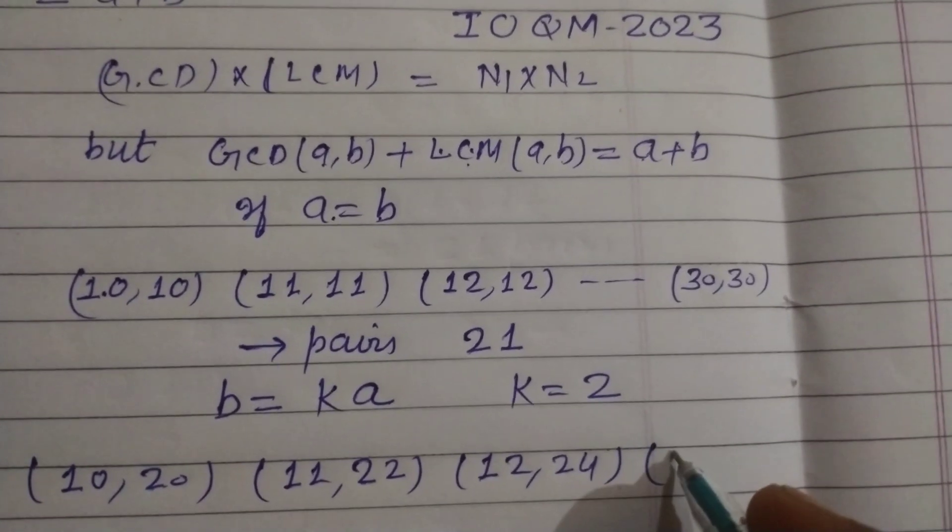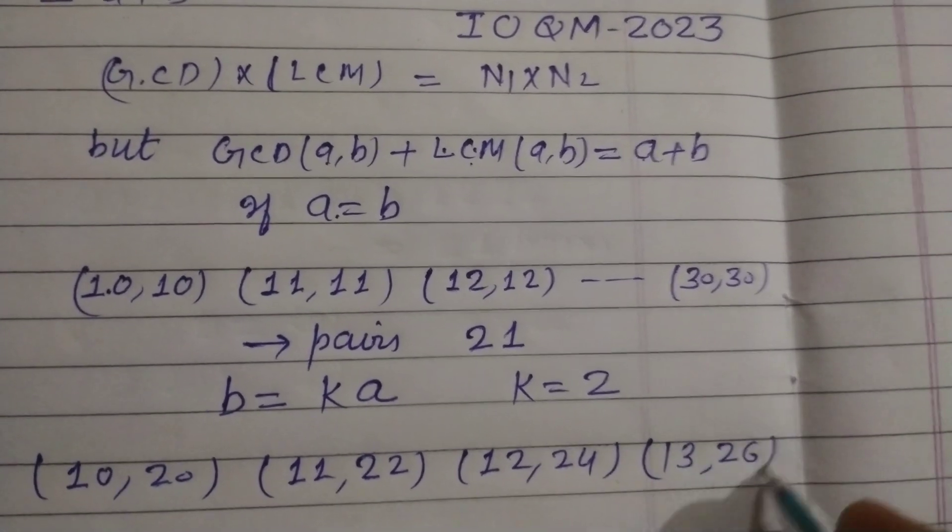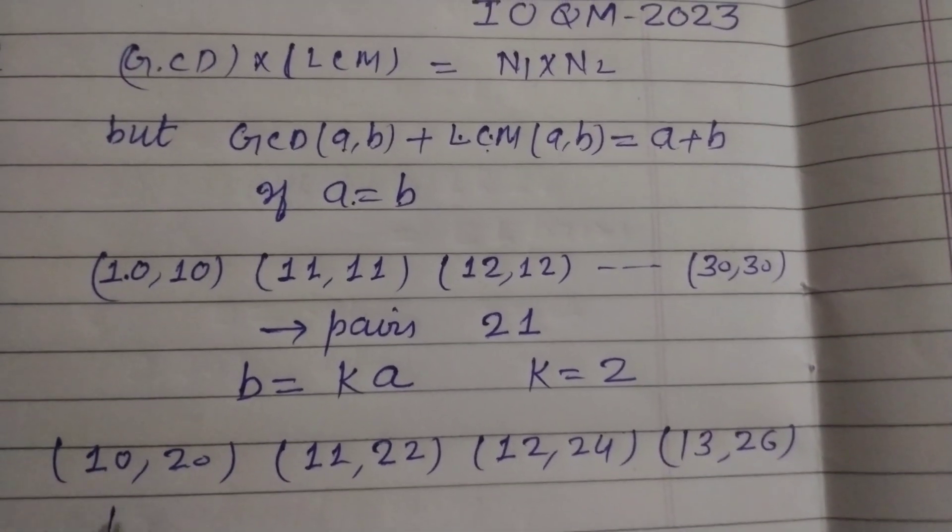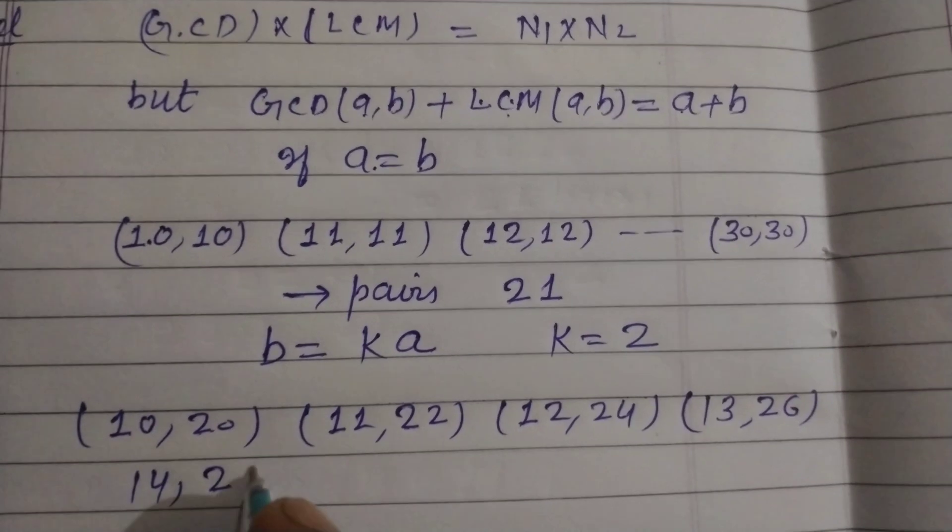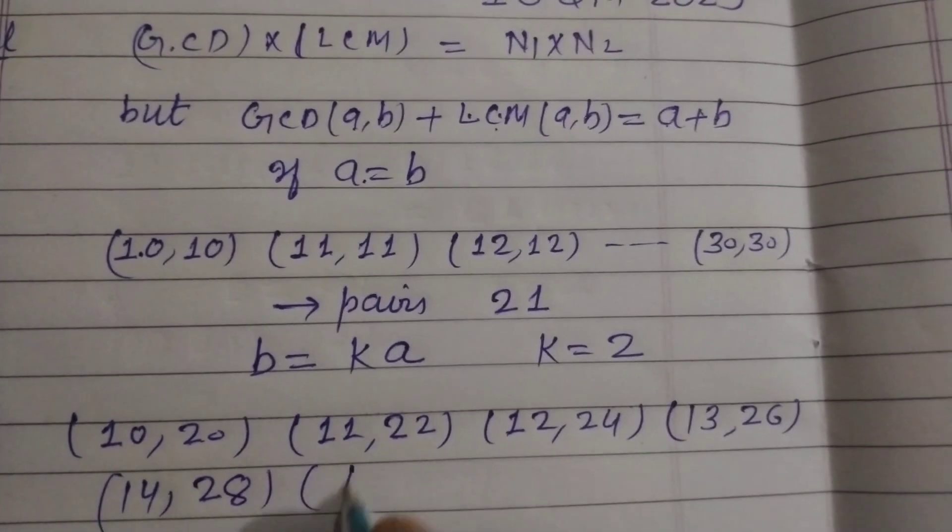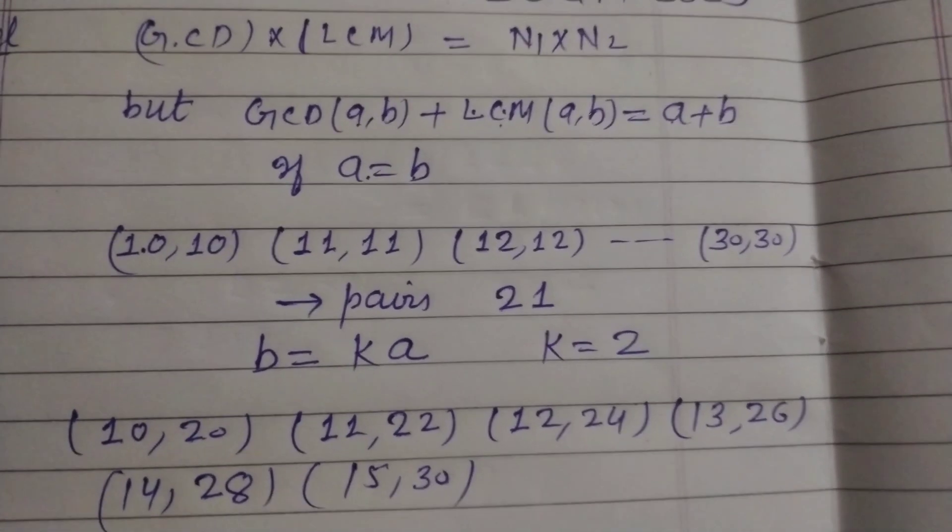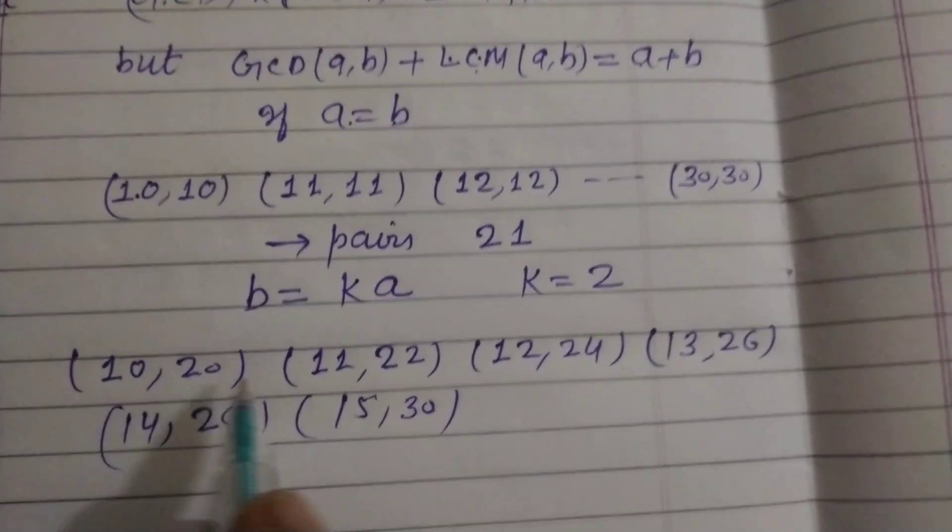(14, 28), (15, 30). So these are how many pairs?